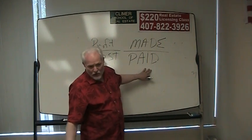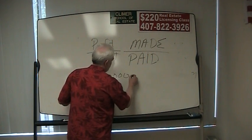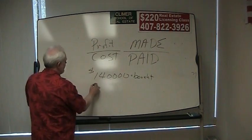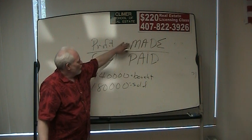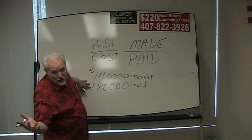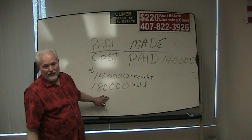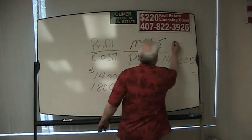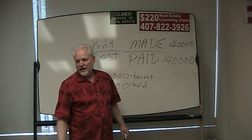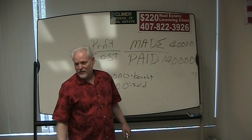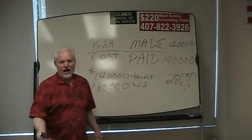What you made over what you paid. You go out and buy a house for $140,000 — that's what you paid. Then you turn around and sell it for $180,000. So we paid $140,000, and we made $40,000. After having paid $140,000, we made $40,000. Put that in the calculator — that's 28.5% profit on that deal.